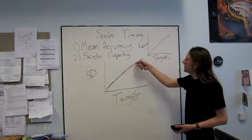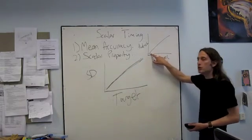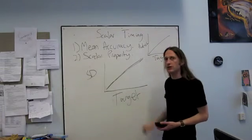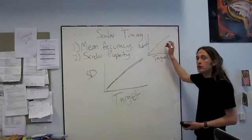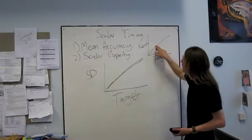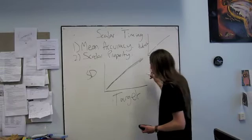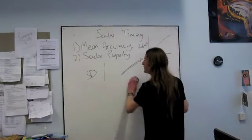And now I want to see whether this increase is proportional to this increase. If I double the target time, do I double the standard deviation? So all I'm going to do is simply divide this by this. So it should give me a constant number. And we call this the coefficient of variation.